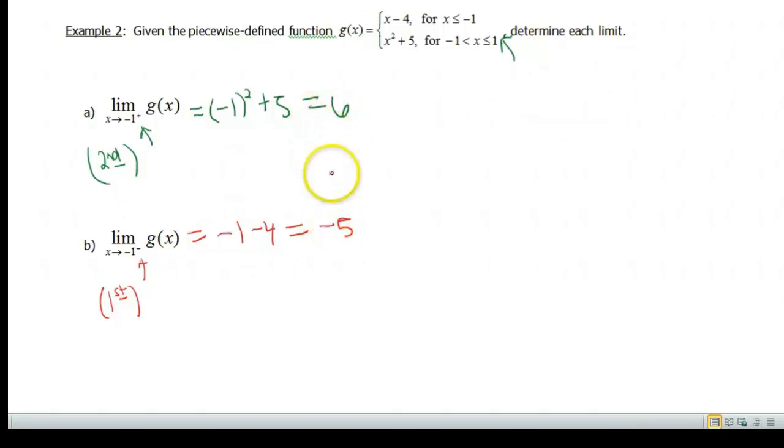So again, I know I didn't ask for it, but we could then say that the limit as x approaches negative 1, no left or right, just overall, of our function g(x) is again does not exist because those two values are not the same.